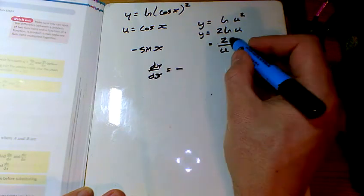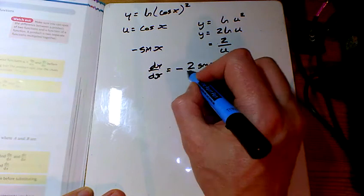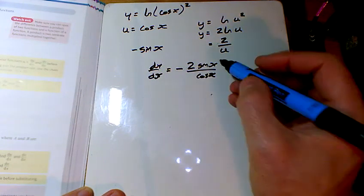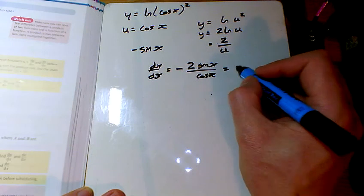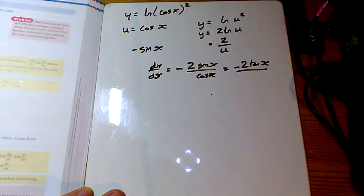So we've got a minus, we've got a 2, we've got sine x on the top, we've got u on the bottom, and u was cos x. Hey look, sine x over cos x. Let's just make that tan x, shall we? So minus 2 tan x.